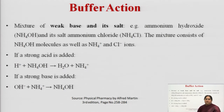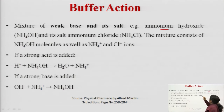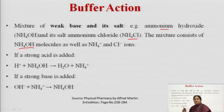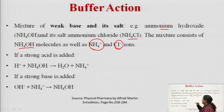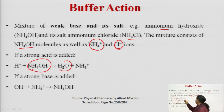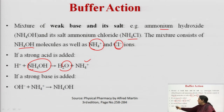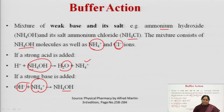Next is the mixture of a weak base and its salt. We have the example of ammonium hydroxide and its salt ammonium chloride. The mixture gives molecules of ammonium hydroxide — since it is a weak base, its dissociation will not be much — along with ammonium ions and chloride ions. If a strong acid is added, ammonium hydroxide reacts with hydrogen ions to give water and ammonium ions. If a strong base is added, the hydroxyl ions react with ammonium ions to give ammonium hydroxide. This is the buffer action.